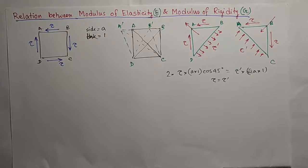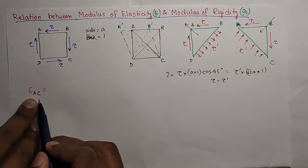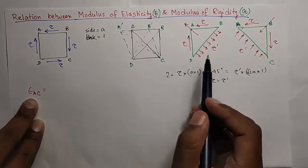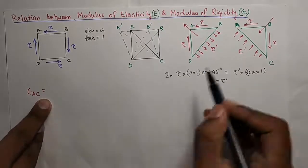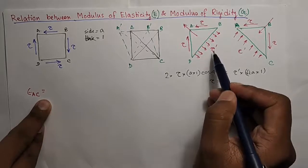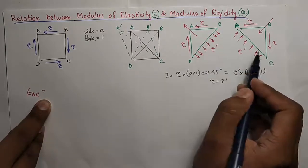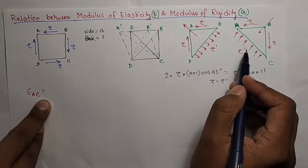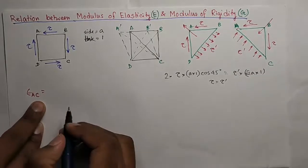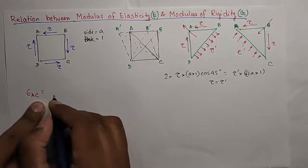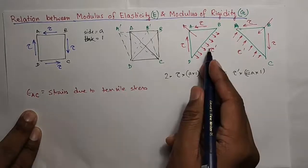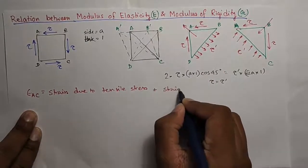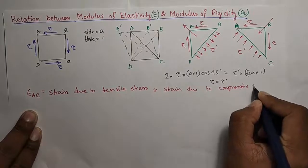Now we have to calculate the strain along AC. The diagonal AC has got strain for both the tensile stress and the compressive stress. The diagonal AC has got a tensile strain for this stress and there is some strain in AC for this compressive stress also for the Poisson's effect. So, let us write down the strain in AC equal to strain due to tensile stress plus strain due to compressive stress.